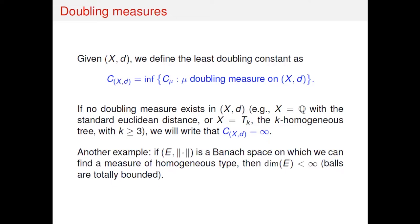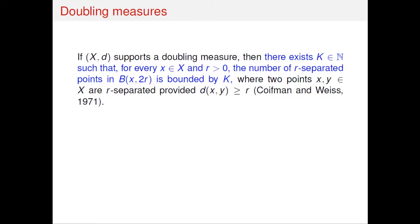Another interesting example is a Banach space. The existence of doubling measures is equivalent to saying the space is finite-dimensional. This is important because a Banach space is complete, and so this shows that completeness on the metric space does not guarantee the existence of doubling measures.